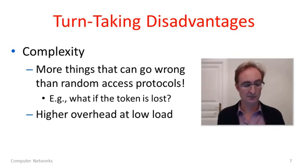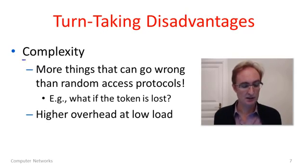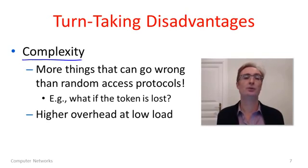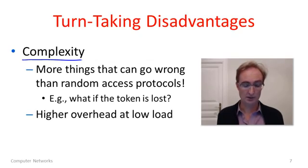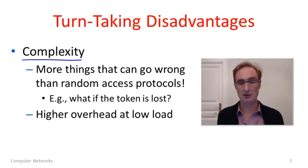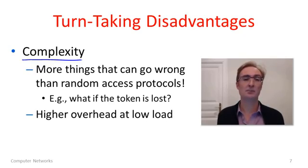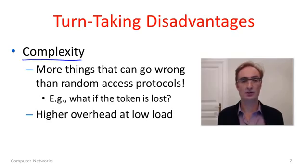There are some disadvantages though. The principal disadvantage is complexity. There's more to this protocol — defining the ordering and imposing it — and that means there's more to go wrong. What could go wrong? Well, just as an example, what would happen if the token was lost? Now, this really shouldn't happen — the token is just a frame going around the ring — but unexpected things can occasionally happen. Suppose the token is corrupted by bit errors, too corrupted for any error-correcting code to deal with, or even an error-detecting code to recognize and allow it to be repaired.